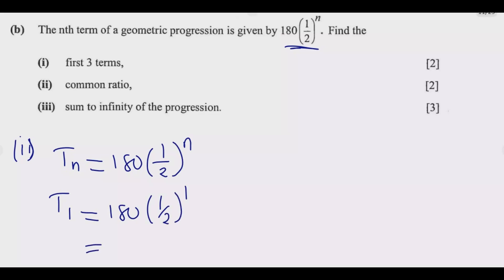If T equals 1 which is the first term, we're going to have 180 multiplied by 1/2 to the power 1 which equals 90, the half of 180. Then we need to find T₂ which equals 180 multiplied by (1/2)² which equals 180 multiplied by 1/4 because the square of 1/2 is 1/4. Then this is going to give me 45.